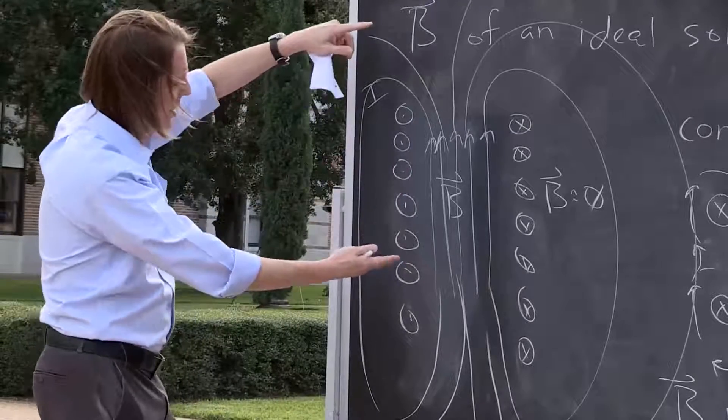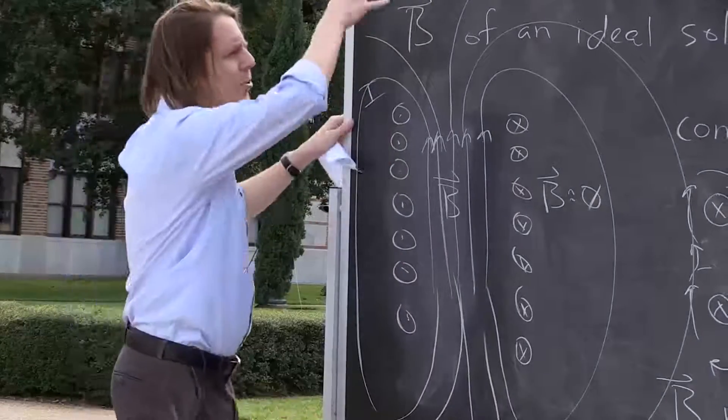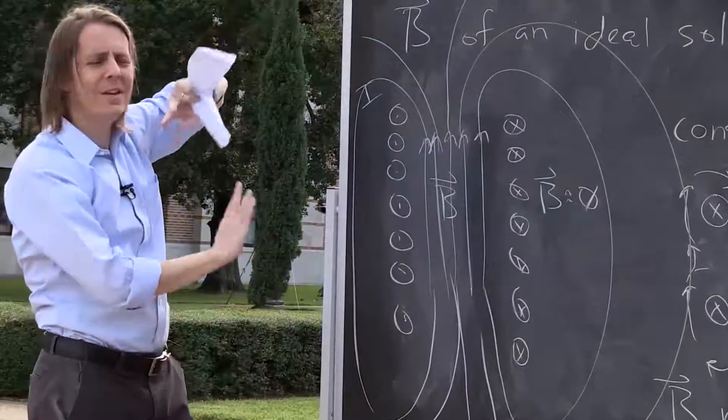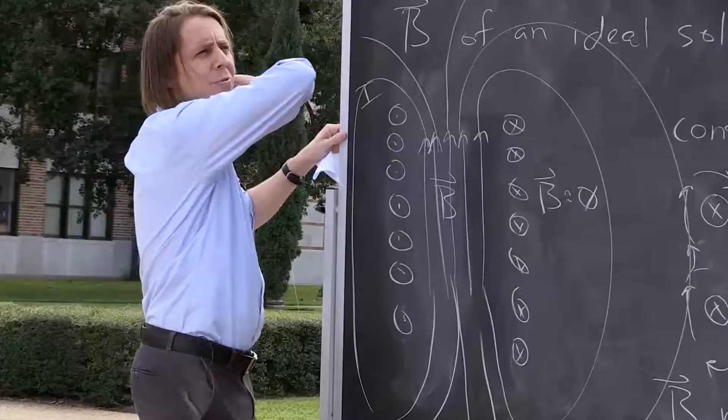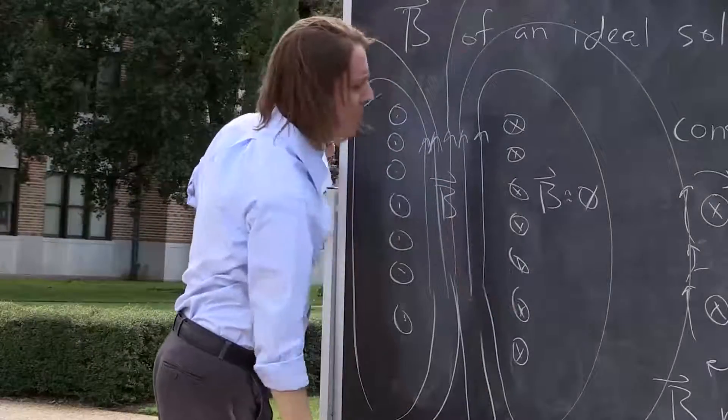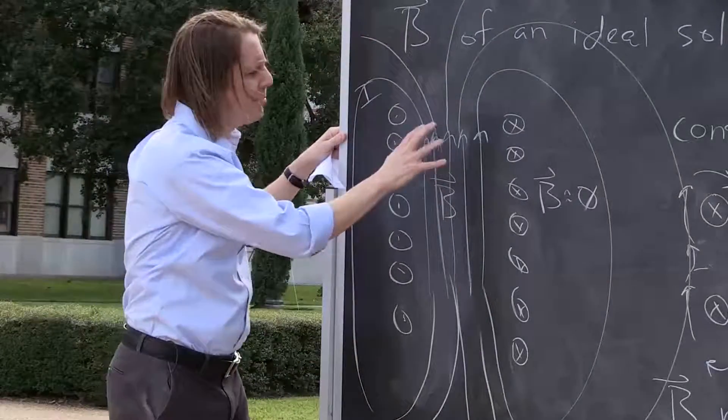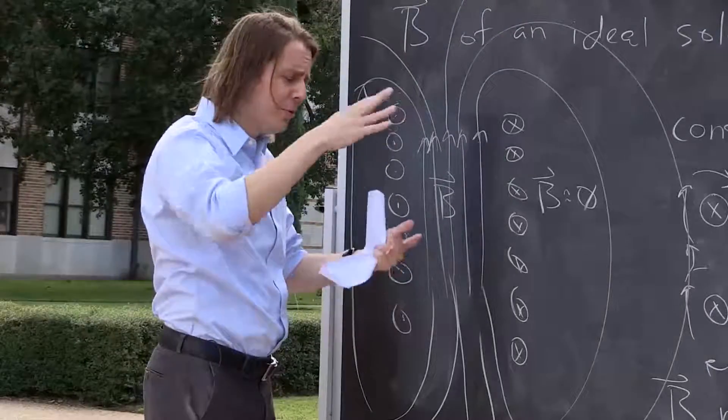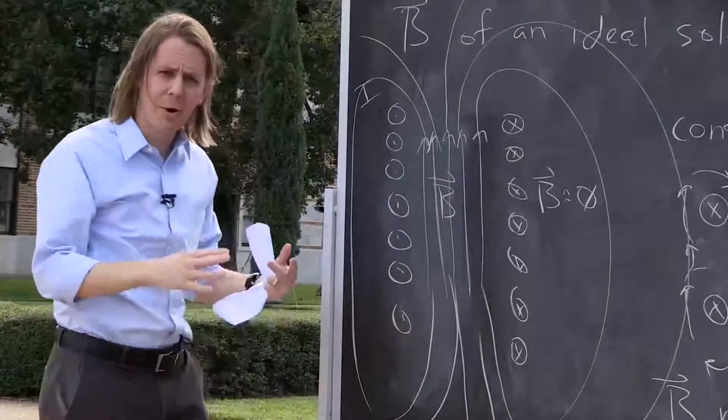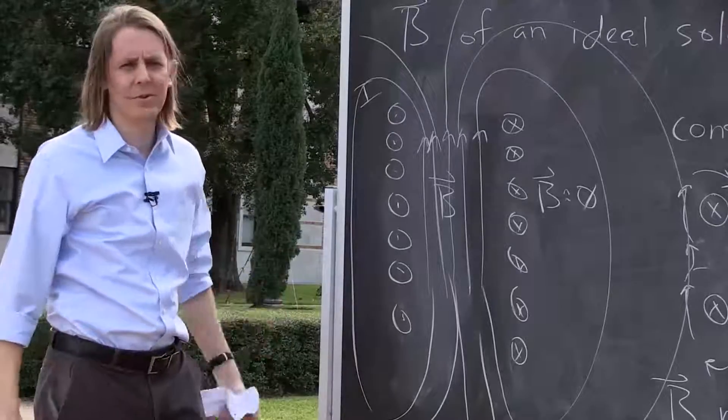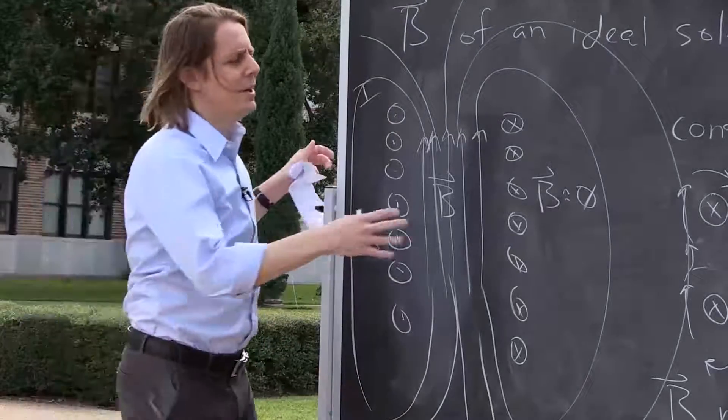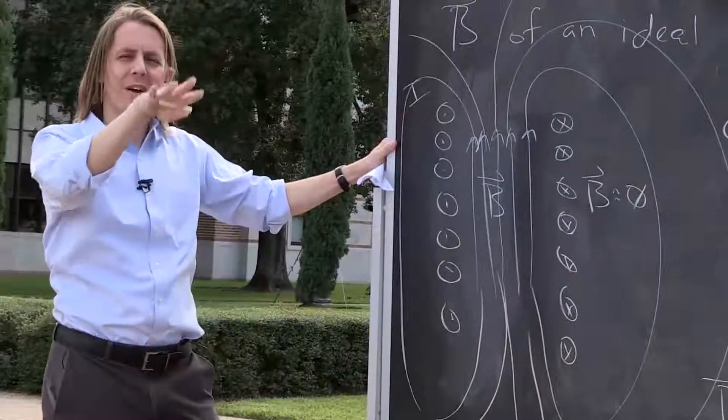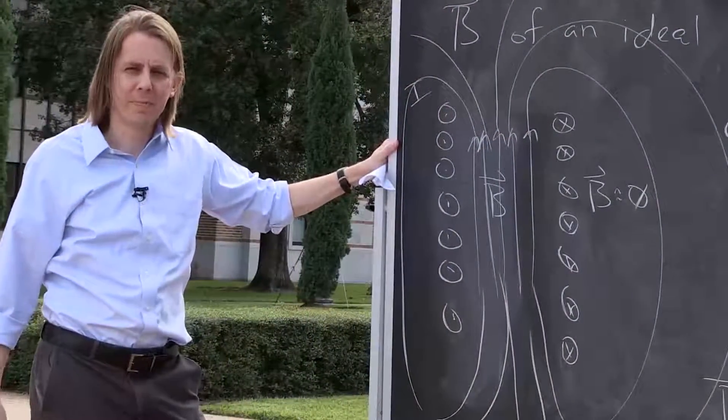So the longer the solenoid gets, the more the field lines end up spreading out. So if the solenoid is sort of an ideal solenoid and essentially infinitely long, then those field lines go really far away before they come back in. And when a finite number of lines goes really far away, they spread way out. So the number of lines per unit area gets smaller because it's a finite number of lines in a huge area. So that's to give you some intuition of why the magnetic field goes down. You have to accept that outside, the magnetic field likes to spread out.